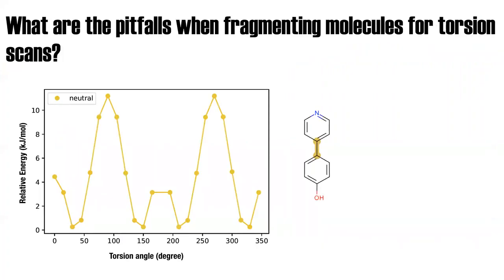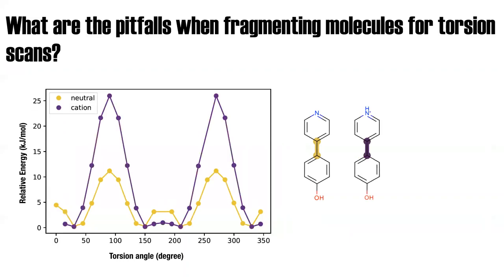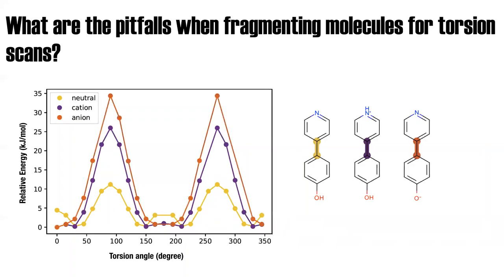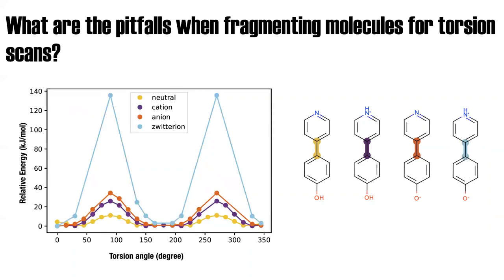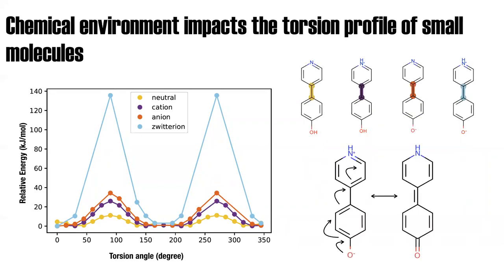What are the problems when fragmenting molecules for torsion scans? Let's look at this biphenyl and its central bond — if you look at the corresponding torsion scan, it looks like a freely rotating bond with some barriers. But if you just protonate the nitrogen on this ring, your barrier heights go up. Deprotonate the oxygen and the barriers go up even higher. When you have the zwitterion, you end up with a scan that looks closer to a double bond than a single bond. Drawing the resonance structure of the zwitterion, you realize the central bond is part of the conjugated system, which explains why the barrier heights are so high.